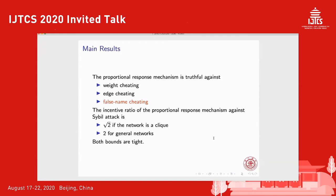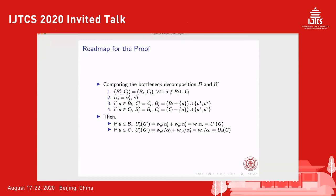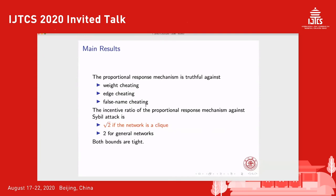Next we consider the false name cheating strategy. This is a relatively easy result to prove. Again, we look at the bottleneck decomposition before and after the agent adopting the strategy, and want to show that by copying himself, an agent's utility does not increase. We show a stronger property: these two bottleneck decompositions are exactly the same, except that we replace vertices in the original graph by copied identities in the new graph. Since the bottleneck decomposition does not change, the alpha ratio does not change, so the agent's utility does not change.